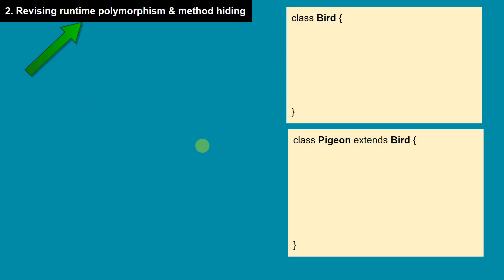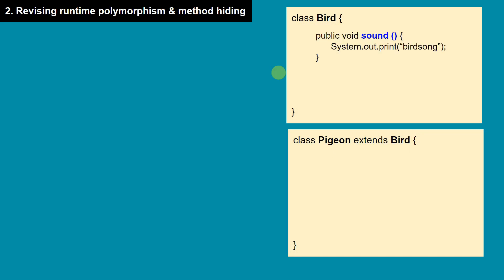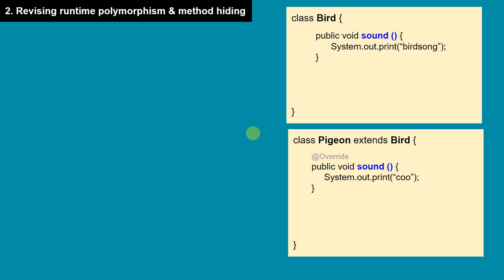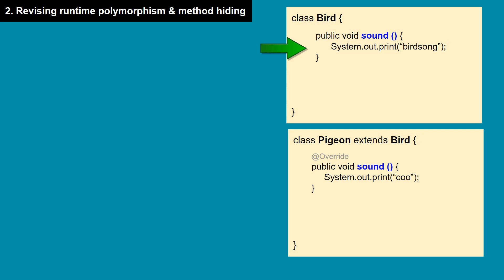Before jumping into default and static methods, let's revise runtime polymorphism and method hiding. Consider we have a Bird class and a Pigeon class where Pigeon is a child class of Bird, and Bird has an instance method called sound. If Pigeon overrides this method, Bird has its own implementation of sound and Pigeon has its own implementation.